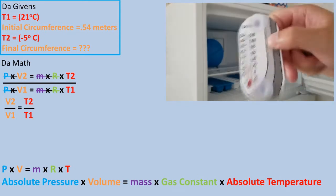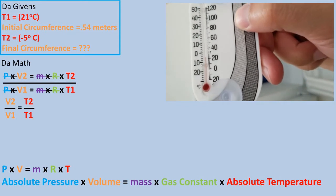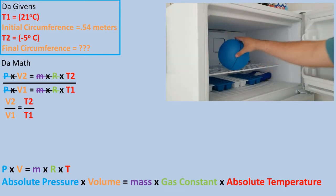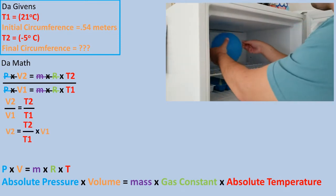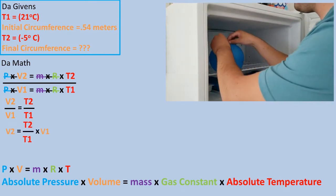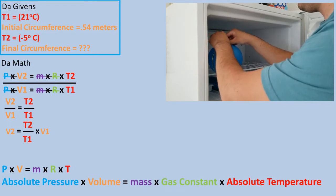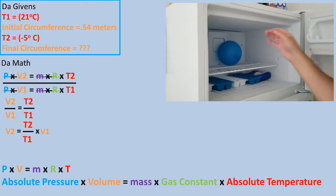We are left with volume two over volume one being equal to temperature two over temperature one. Further rearranging this formula to get what we are solving for, volume two to one side, we get that temperature two over temperature one times volume one equals volume two.